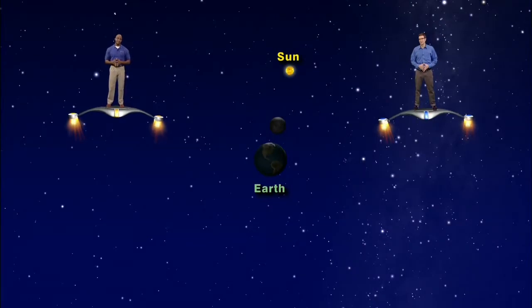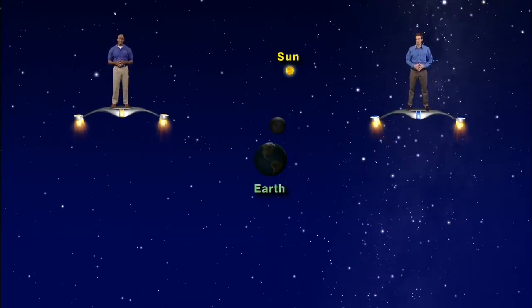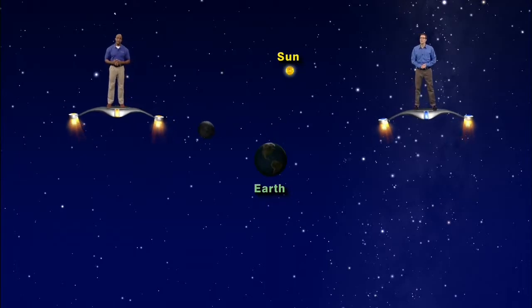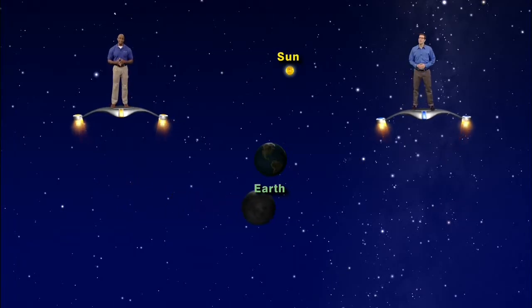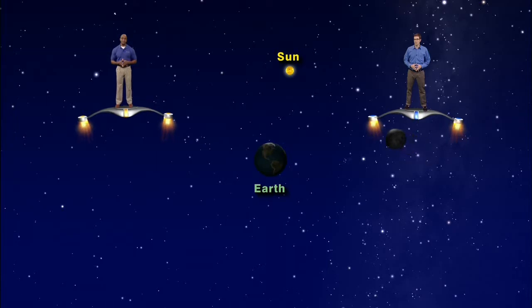Unlike the sun, the moon does not give off its own light. It simply reflects light from the sun. So, as the moon travels around the earth, we see sunlight reflecting off the daytime side of the moon. The dark portion that we can't see is the nighttime side of the moon, also known as the dark side of the moon.